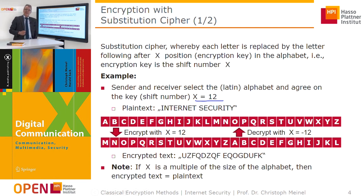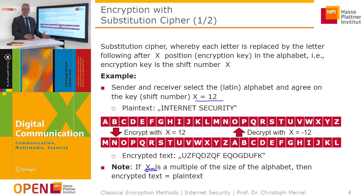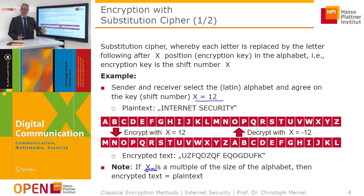In the context of the substitution cipher, it is important that the key X is not allowed to be a multiple of the size of the alphabet. If you shift the 26-letter alphabet by 26 positions, you get the identical alphabet and the cipher, although encrypted, is exactly the plain text.